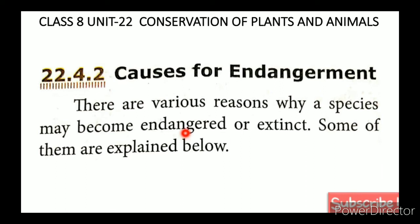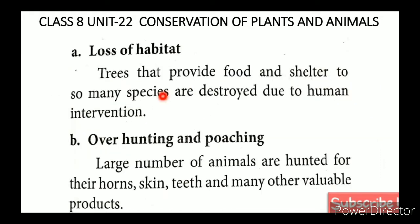Some species are already extinct — for example, the dinosaur. One cause of endangerment is loss of habitat. Habitat is the living place of an organism. Trees that provide food and shelter to so many species are destroyed due to human intervention, which leads to the destruction of those species.